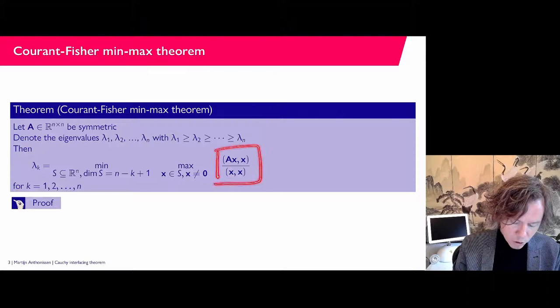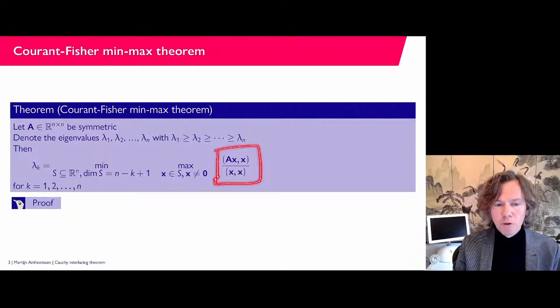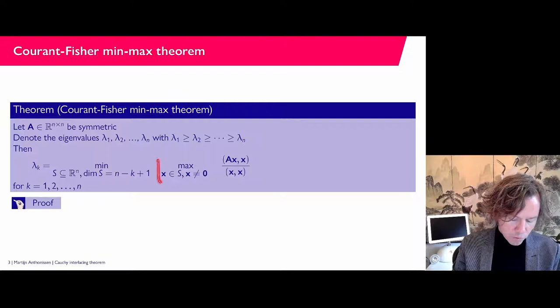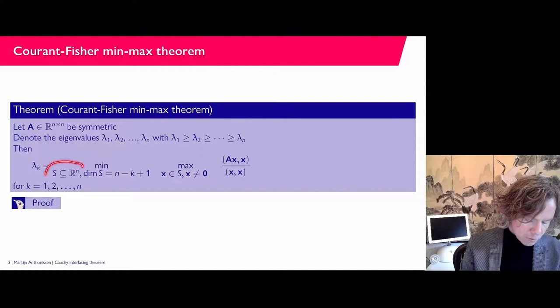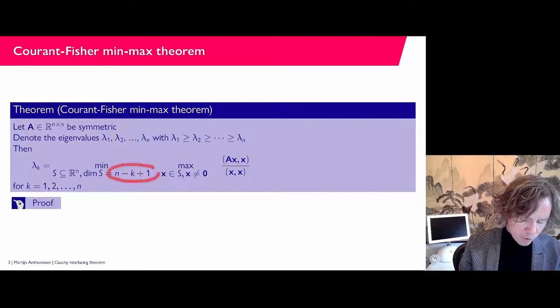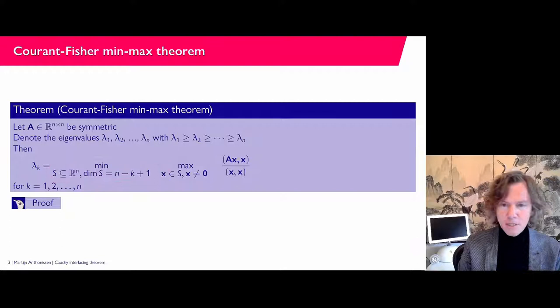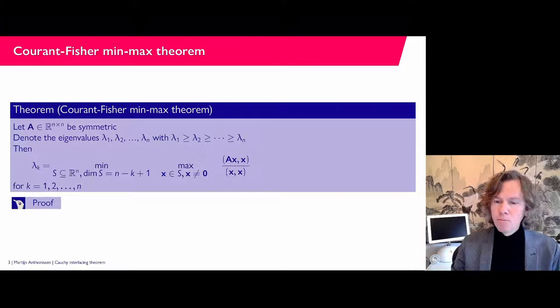Here are Rayleigh quotients — we have seen these before. If you pick for x an eigenvector, you find the corresponding eigenvalue. But now we can take any vector from a subspace S, with x ≠ 0 to avoid division by zero. For these spaces S, we pick them in Rⁿ with dimension n − k + 1, and then we want the space S for which we minimize the maximum of the Rayleigh quotient. That's what it says, and during the proof it will become clearer.